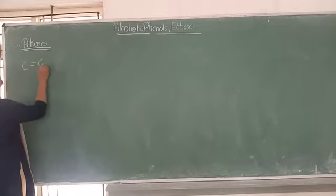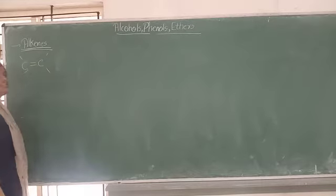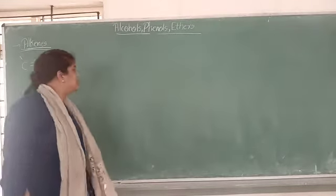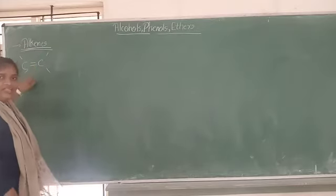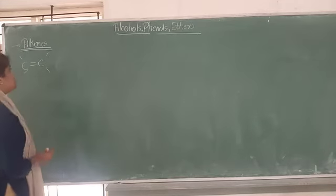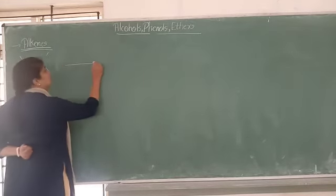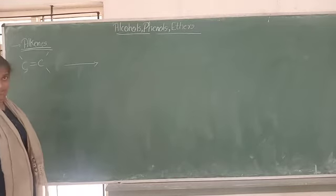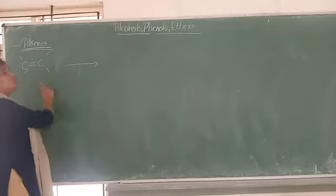So what are alkenes here? You know that alkenes are nothing but the compounds where there is a double bond between carbon atoms. So we are going to use alkenes to prepare alcohol.